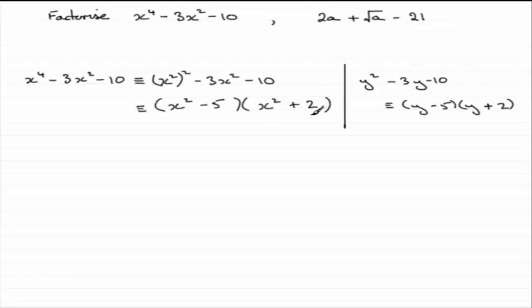We often say that this is a quadratic expression in terms of x squared, a quadratic in x squared. Let's have a look at this one now. We've got 2a plus the square root of a minus 21.